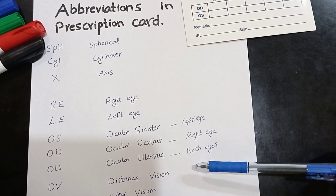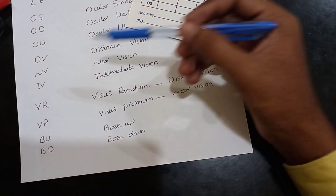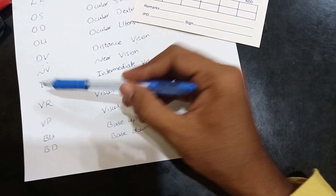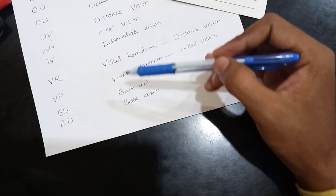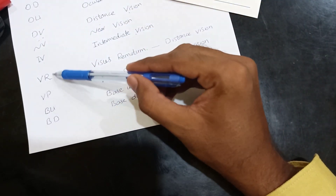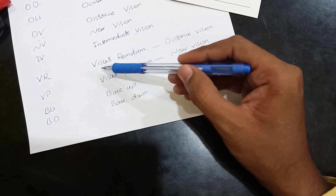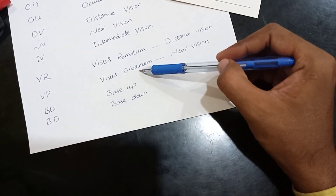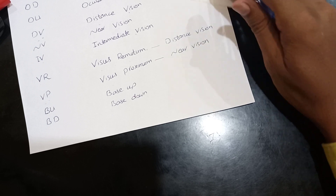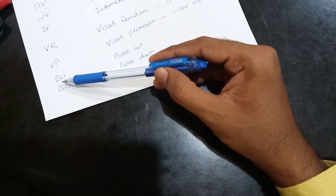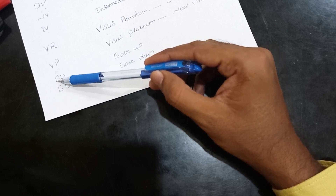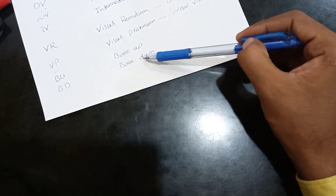DV means distance vision, NV means near vision, and IV means intermediate vision. VR stands for visus remotum, meaning distance vision, and VP stands for visus proximum, meaning near vision. If a prescription includes prisms, BU means base up prism and BD means base down prism.